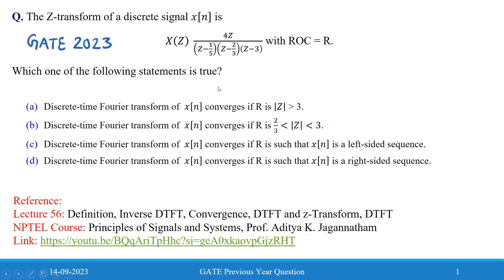This question is from GATE 2023, based on Z-transform from Signals and Systems. The question states that the Z-transform of a discrete signal x[n] is given as X(z) with region of convergence equal to r. One of the following statements is true, and the options are given below.